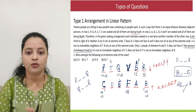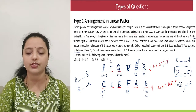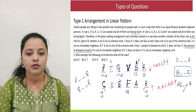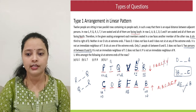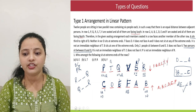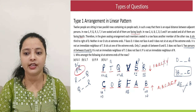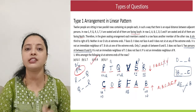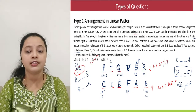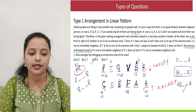Once the placement is done, answer the question: who among the following sit at the extremes? It is either PR or PC. Checking the options, PR appears in the options. So our answer is option C. This is how you are supposed to approach a linear arrangement question.